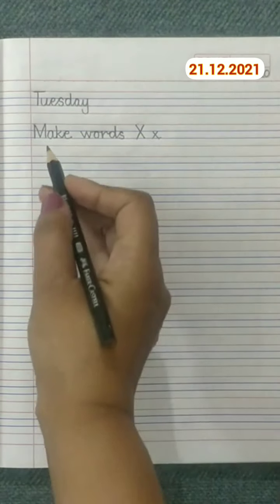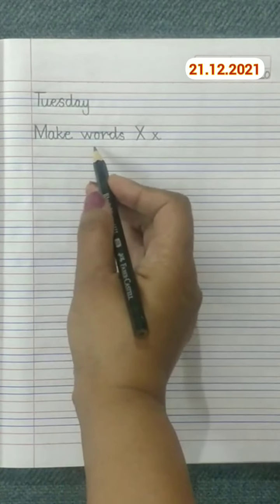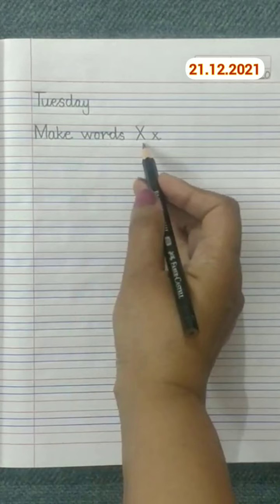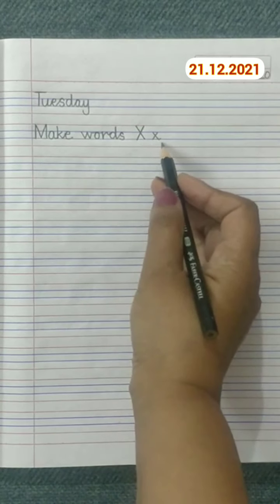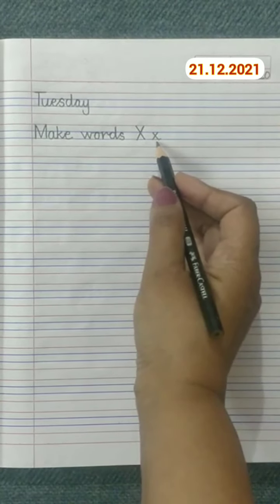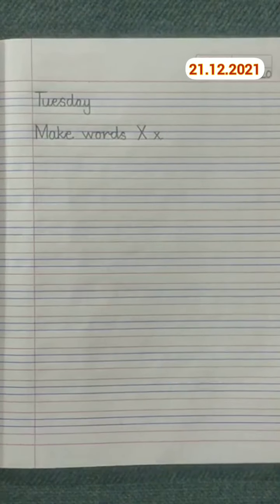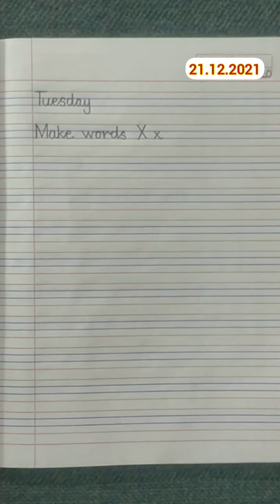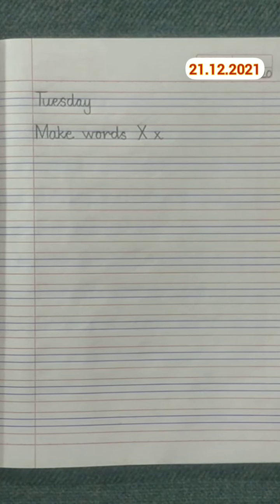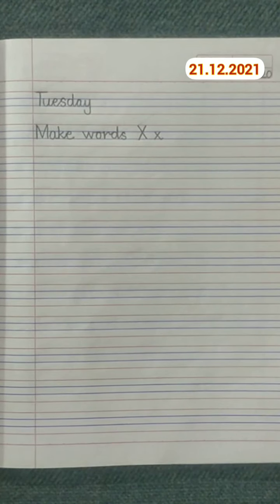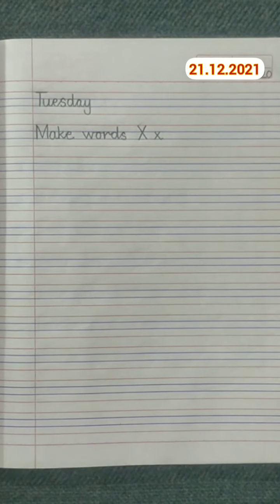Now near the margin line you will write down 'Make words X x' - uppercase X, lowercase x. Children, today we will write words that start with letter X and a few words that end with letter X. So let's get started.